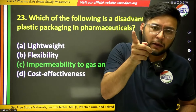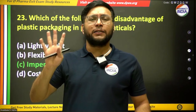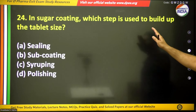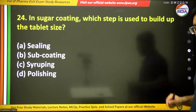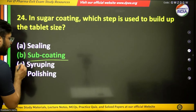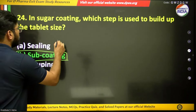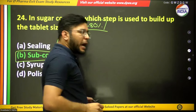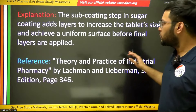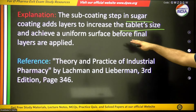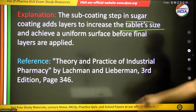The twenty-fourth question: in sugar coating, which step is used to build up the tablet size? Each step has its own objective — sealing prevents moisture penetration, and sub coating builds up the tablet size by 50 to 80 percent. The answer is sub coating — this step layers the tablet to increase its size and achieve a uniform size and weight before the final layers are applied.